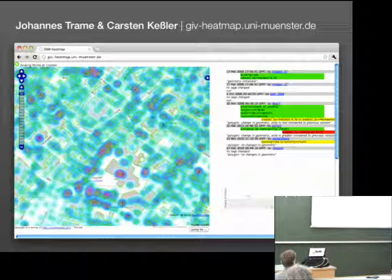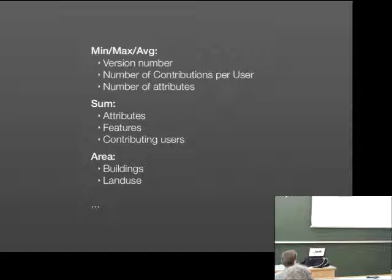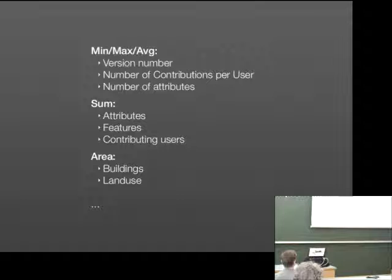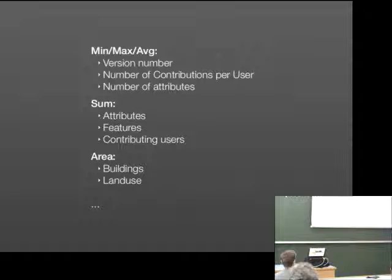Since these two approaches mainly focus on only one type of attribute, namely the version number, we were trying to visualize a set of different attributes. We calculated the version numbers, the number of contributions per user, the number of attributes, and average, minimum, and maximum values. We calculated the sums of the attributes, features, and contributing users, and for the areas of buildings or land use such as commercial, farmland, and industrial. There are a lot more planned, so that's what we have right now.